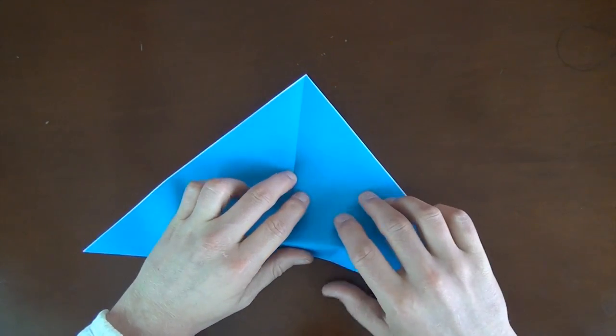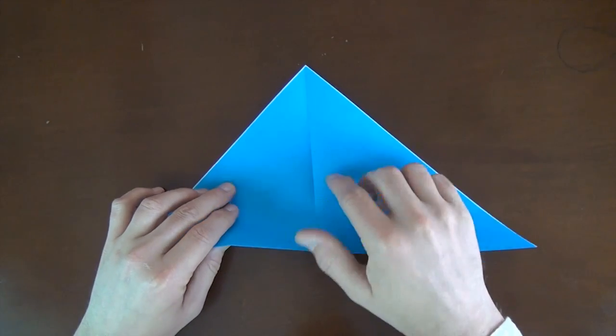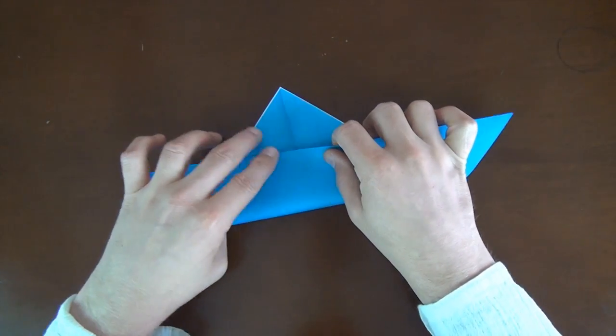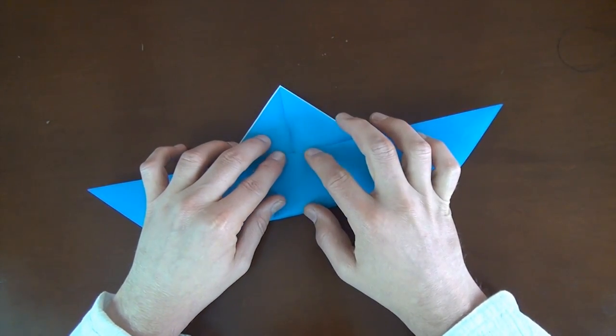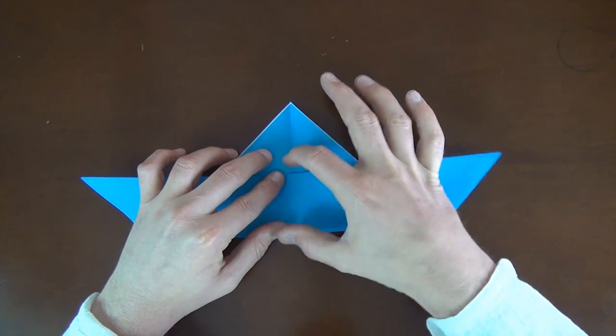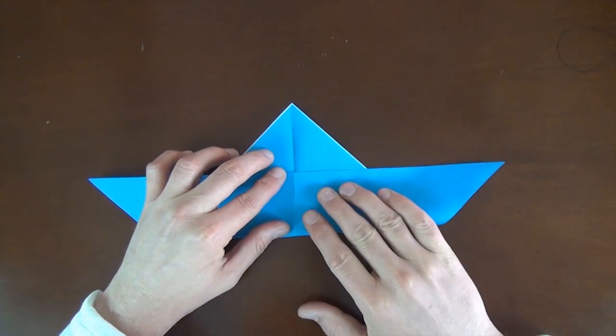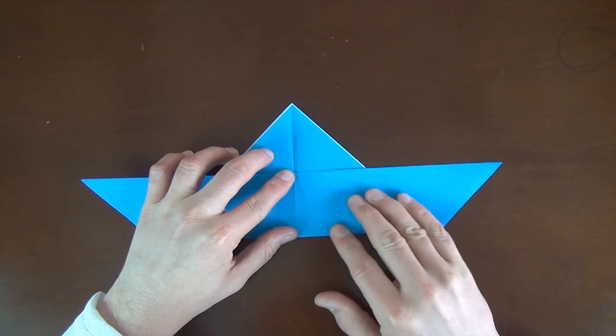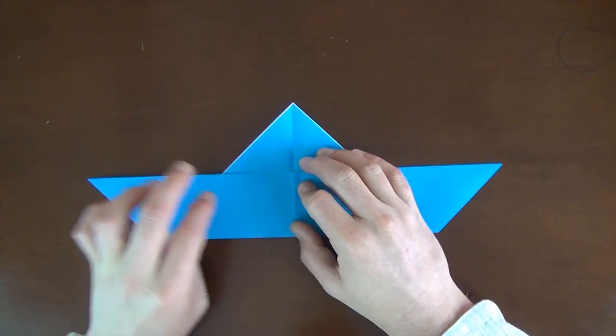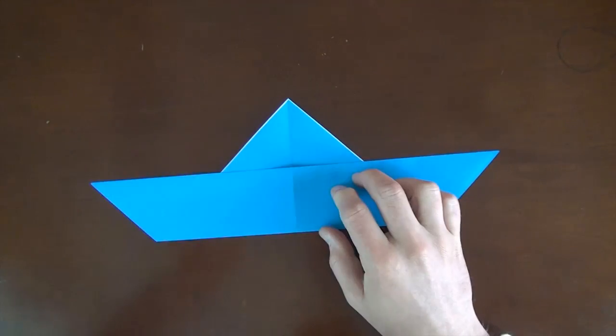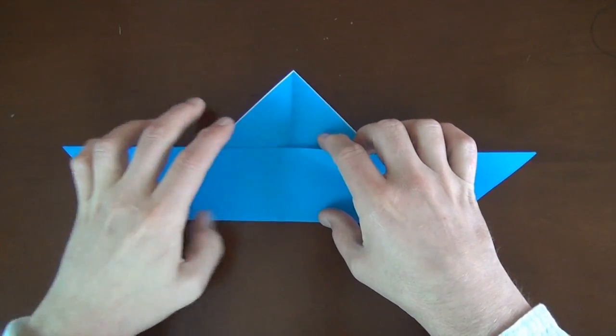And now we're going to fold this edge up one-third. So you want to fold it up so it's like this, so that this length is equal to this length. So just estimate. It doesn't have to be perfect, but just do your best. And now unfold.